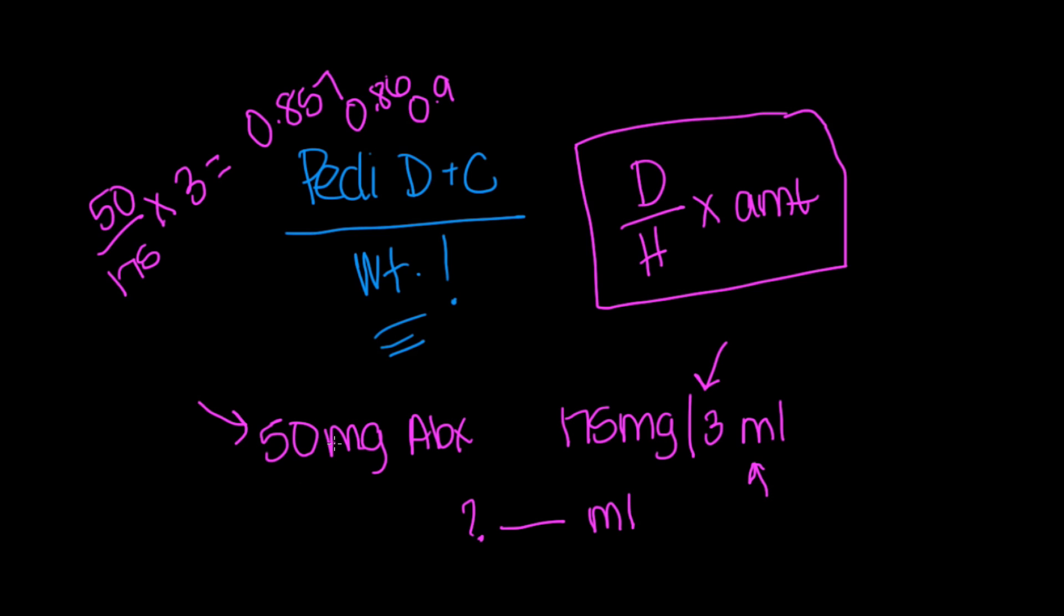Now, with pediatric math, we just have one more thing in the equation. We have to consider the weight. So, for instance, if we had the same exact question, but now we're dealing with PD. And let's say that the question becomes 50 milligrams per kilogram. And we know that the child weighs, let's say, weighs 62, actually, let's do pounds so I can make you convert, 62 pounds.